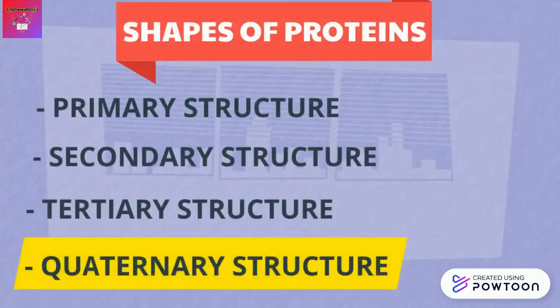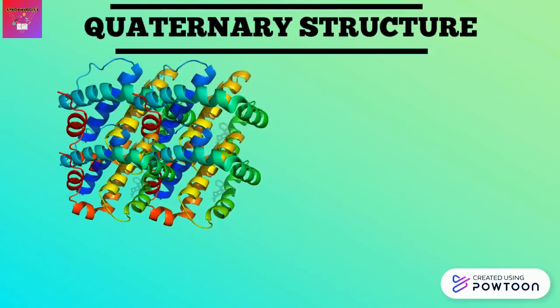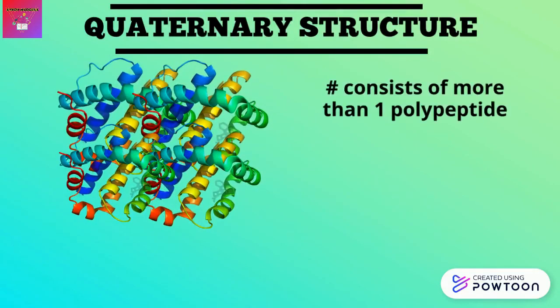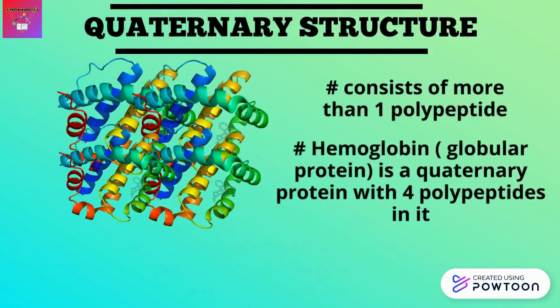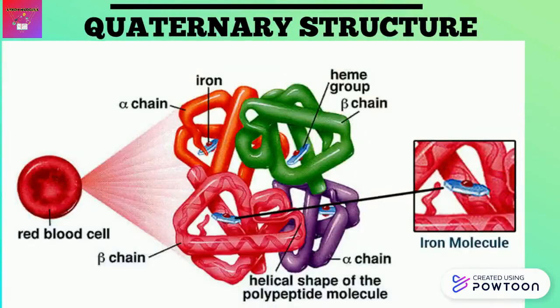Last but not least, we have the quaternary structure of proteins. This type of protein has more than one type of polypeptide chain in it. A very common example of a quaternary protein would be hemoglobin. Hemoglobin is a quaternary protein with four polypeptides in it. Each polypeptide would have primary, secondary, and tertiary structures within them. As you can see in this picture of a hemoglobin molecule, there are four different types of polypeptides in it.